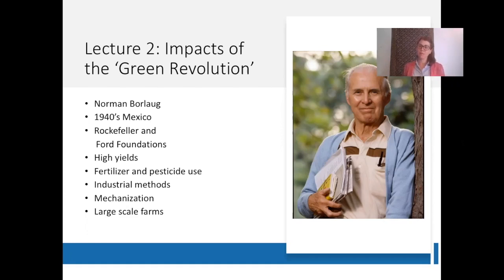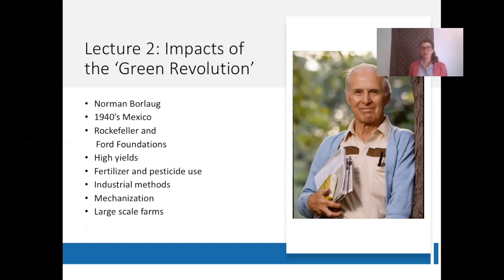By combining Barlow's wheat varieties with new mechanized agricultural technologies, Mexico was able to produce much more wheat than was needed by its own citizens. This led to Mexico becoming an exporter of wheat by the 1960s. Prior to the use of these varieties, the country was importing almost half of its wheat.